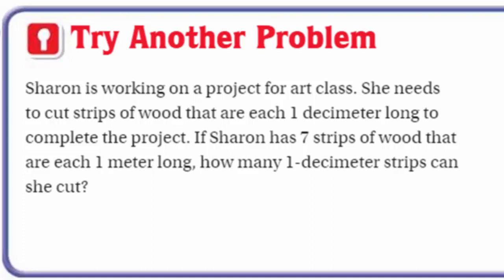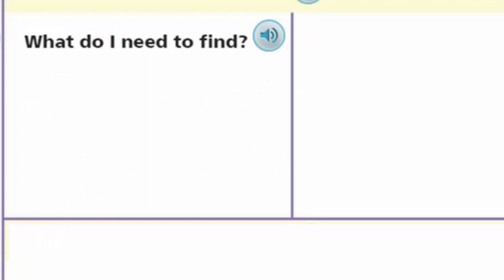We have our graphic organizer again, and remember the whole purpose is the strategy: make a table. 'What do I need to find?' It's similar to our last problem. What do I need to find? I need to find how many one-decimeter lengths of wood Sharon can cut. That's really the question — how many — so let's write that down.